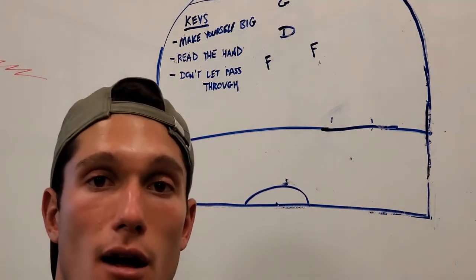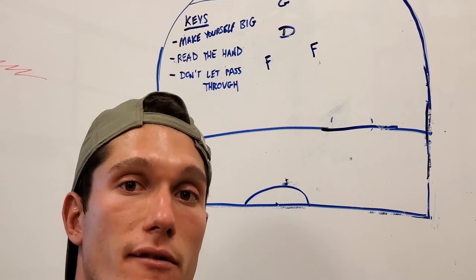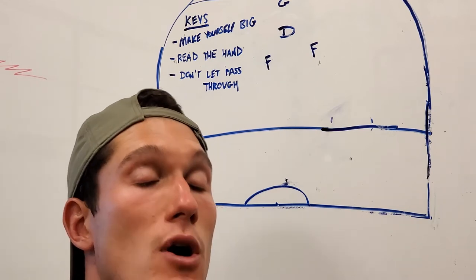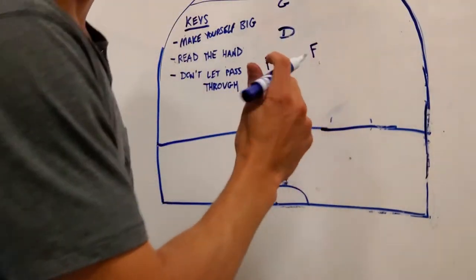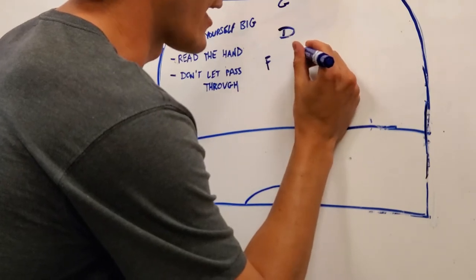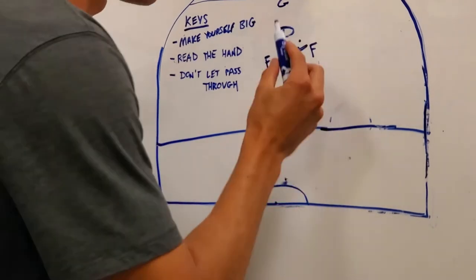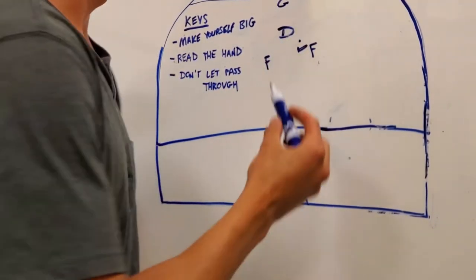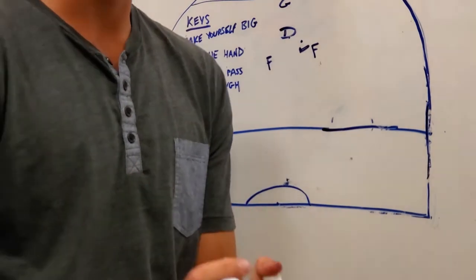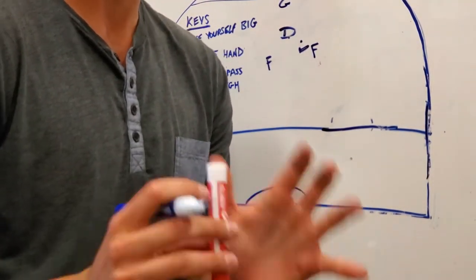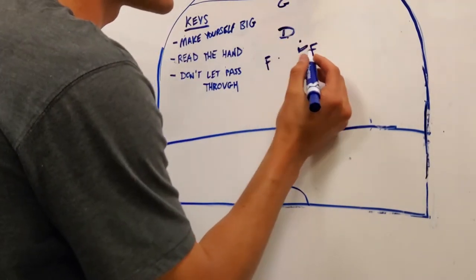The second key is reading the puck carrier's hand. This is very important as a defenseman. If a forward's coming down the ice and he's a lefty and he has that puck right there, that's a pretty dangerous area for him to have a grade A scoring chance on his left side. So if he's a lefty in that position, I'm gonna play him a little tighter to make sure he can't get off that shot.